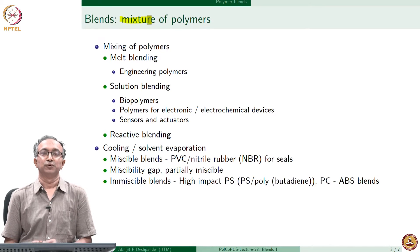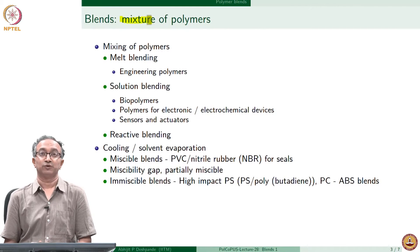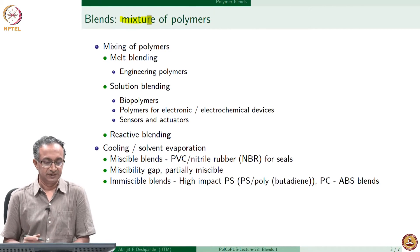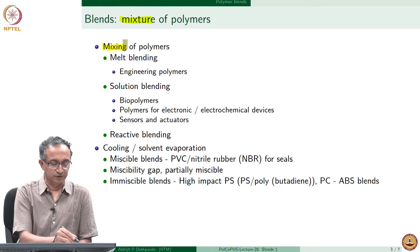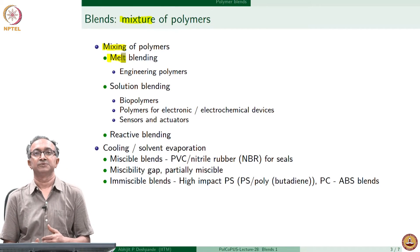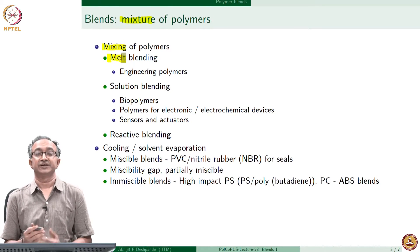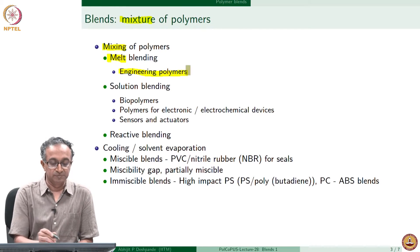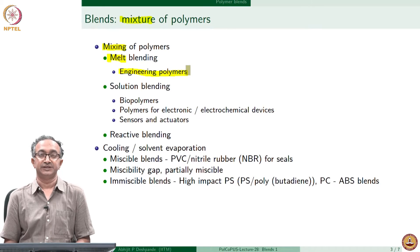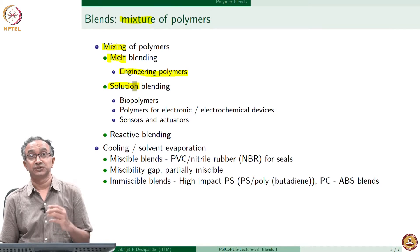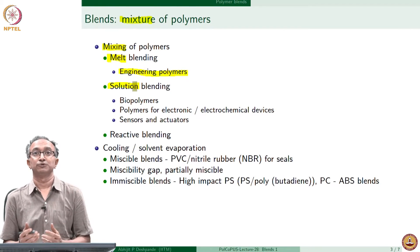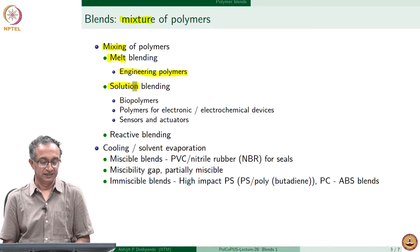Both of these polymers can exist themselves as homopolymers, but we mix them in required proportions to optimize or tune properties. This mixing can be done by two ways. We can do melt blending, where we take both polymers to the melting temperature and above and then do the mixing. Many engineering polymers and commodity plastics are blended using this method. We could also dissolve both polymers in a common solvent — that is called solution blending — and by evaporating the solvent we can achieve a blend.